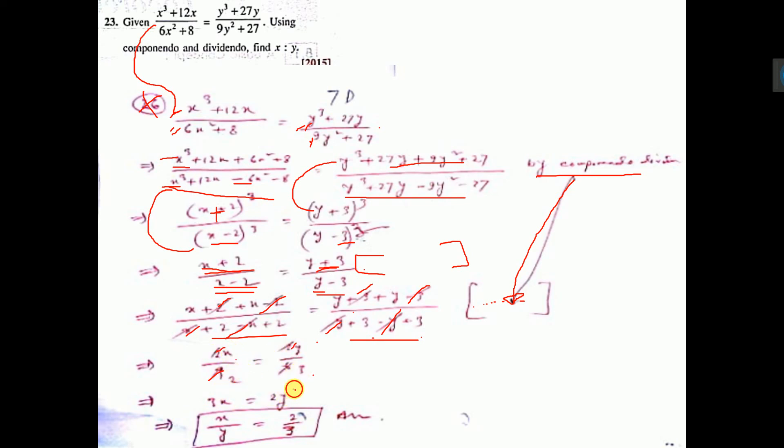So 3x equal to 2y. Now bring y down, 3 down, so you are getting x by y equal to 2 by 3. So this is the ratio.